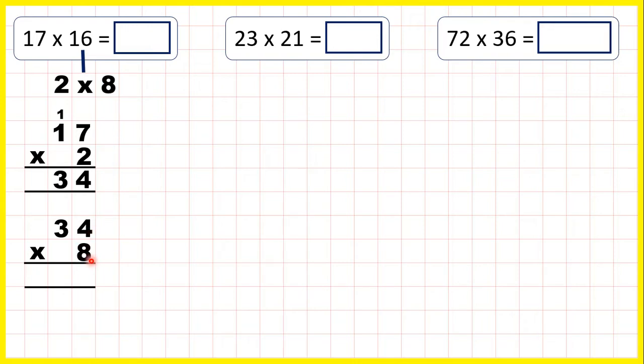4 times 8 is 32. So 3, 2. 3 times 8 is 24. Plus 3 is 27. So by multiplying 17 by 2 and then by 8, we've multiplied by 16. Our answer is 272.